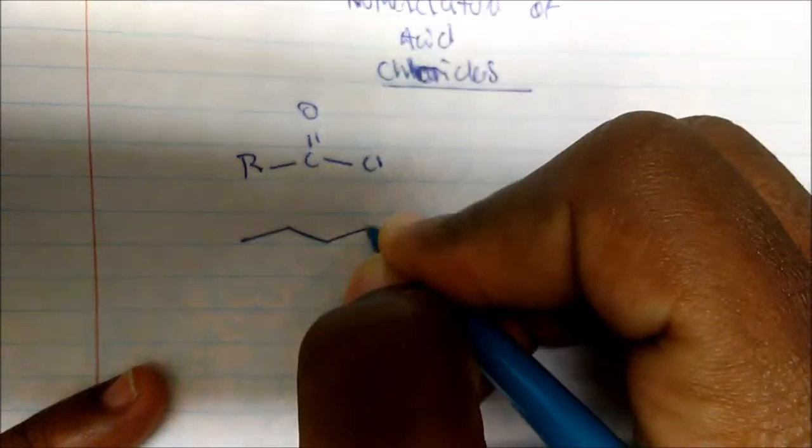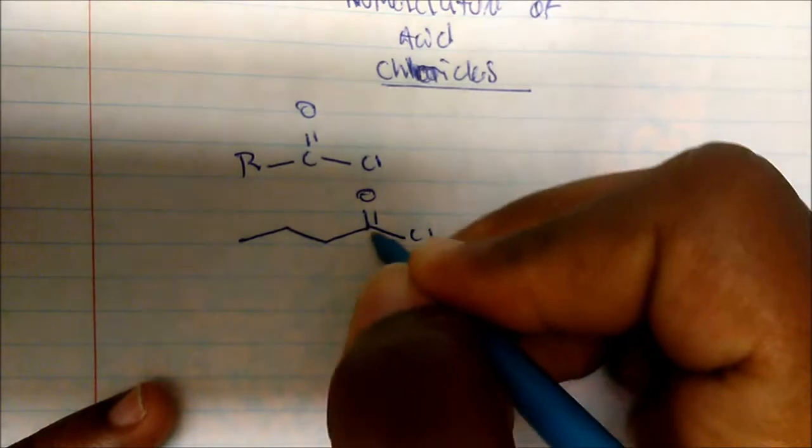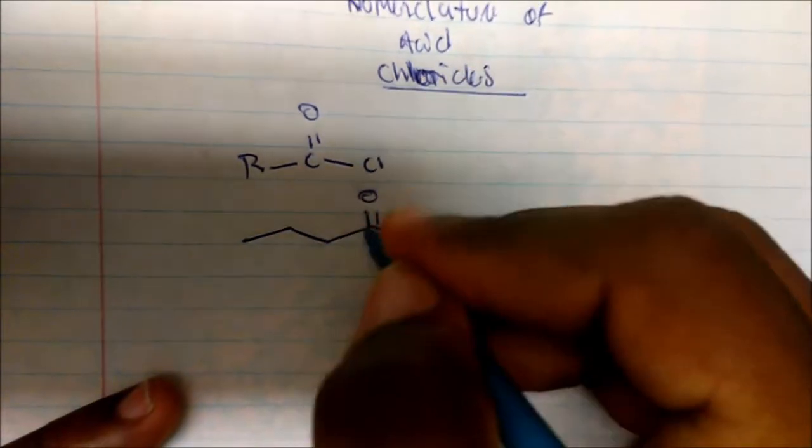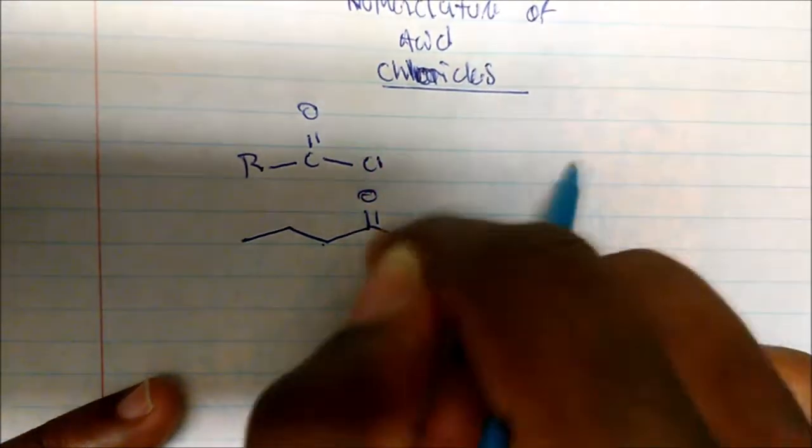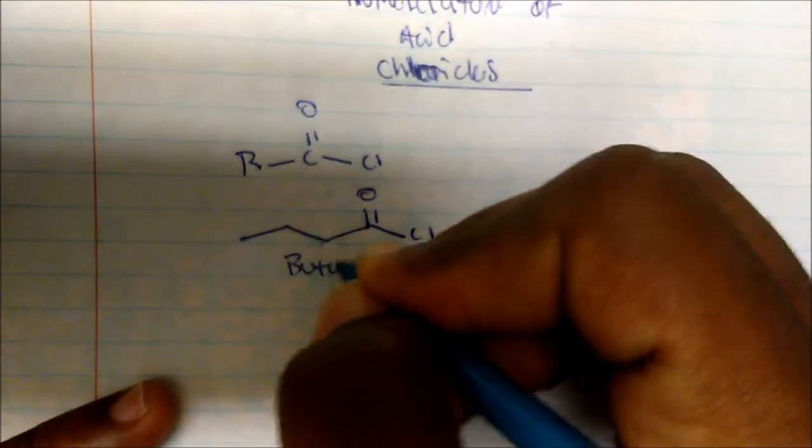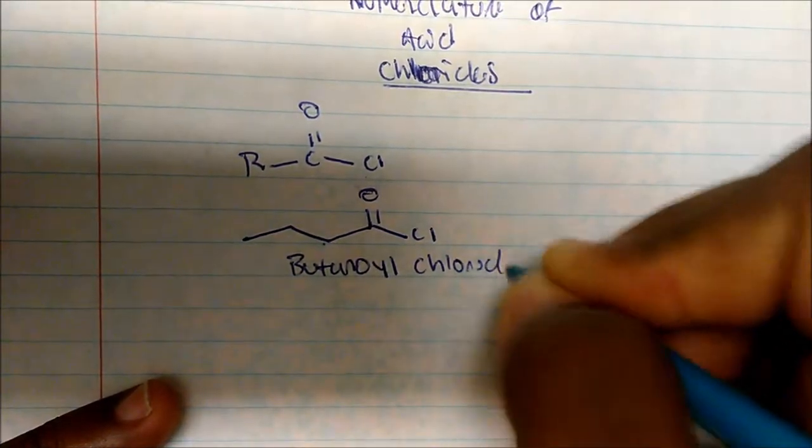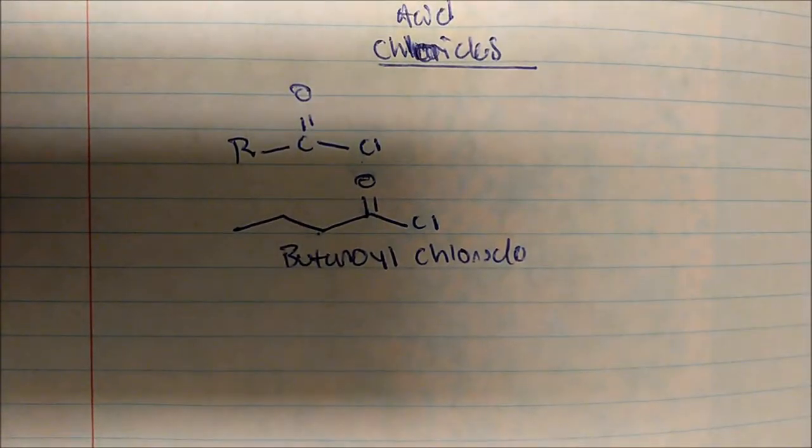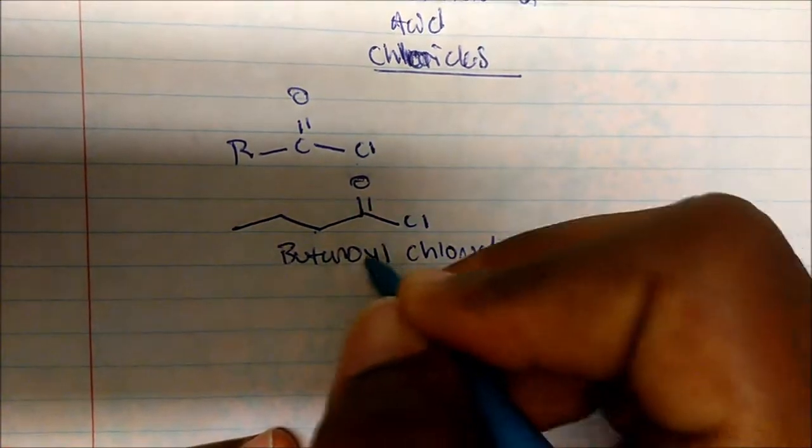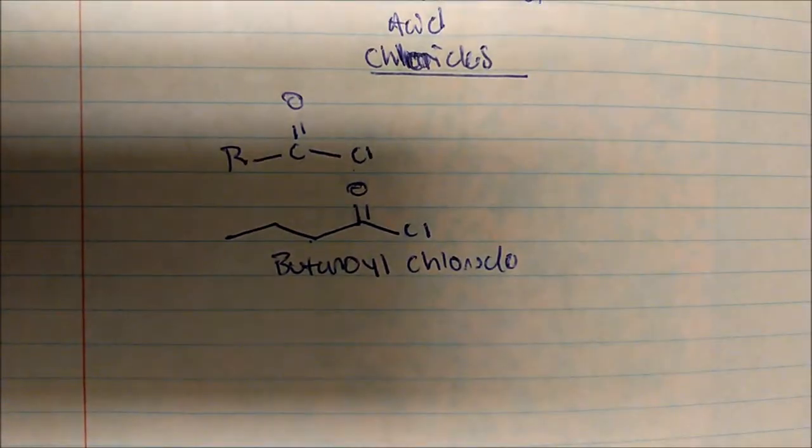How would we name this compound? We have given our acid chloride group the lowest priority number possible. This is one, two, three, four. Usually we say this is butanoic acid if we had an OH here instead of the chlorine, but because it's an acid chloride we say this is butanoyl chloride. Notice this O-Y-L here kind of replaces the noic.